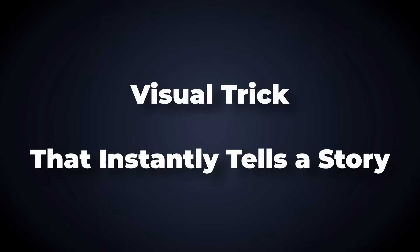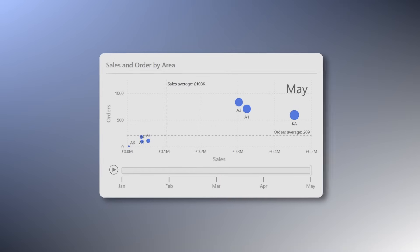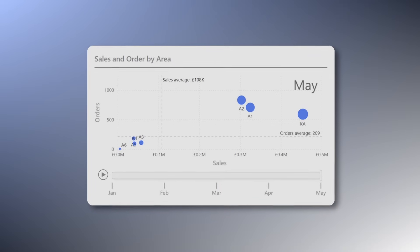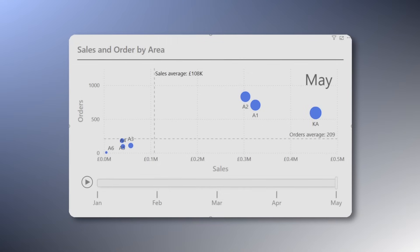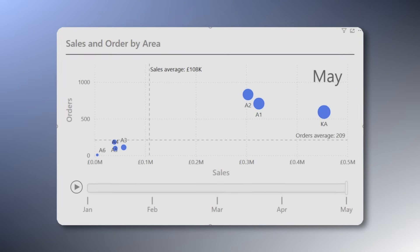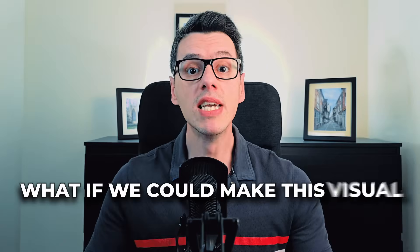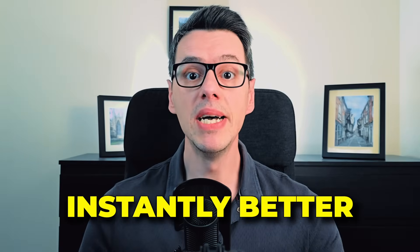Let's begin with a quick demo that might blow your mind before we circle back to the column chart. In my last video I showed you how to build an animated scatter plot to visualize trends over time using average lines for both orders and sales. Now what if we could make that visual instantly better by highlighting the areas that perform better than the average? Here's how to do it.